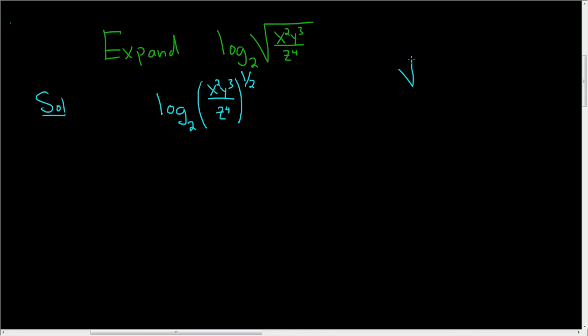You can do that because the square root of x is just x to the one over two. There's a one here and there's a two here, so it's just one over two.